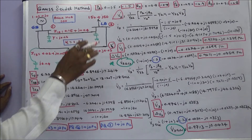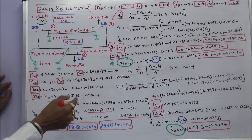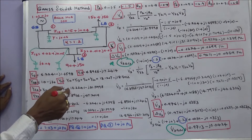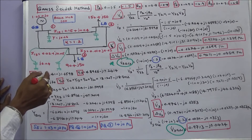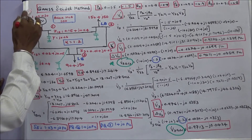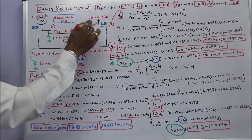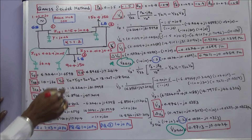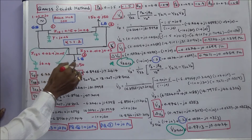In this class we work out a problem using the Gauss-Seidel method. This is the given power system network, which consists of three buses. Bus 1 is a generator bus with voltage 1.03 + j0. Bus 2 is a load bus with load 150 + j50. Bus 3 is a load bus with load 90 + j50.